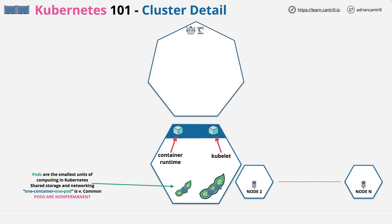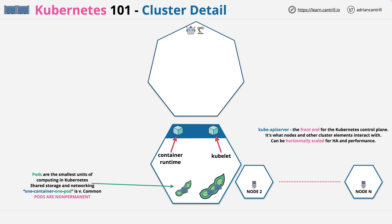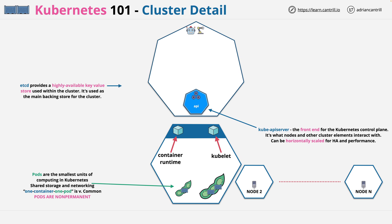There are other things linked to pods which provide more permanence, but more on that elsewhere. Now let's talk about what runs on the control plane. First, the API — known formally as kube-apiserver — is the front end for the control plane. It's what everything generally interacts with to communicate with the control plane, and it can be scaled horizontally for performance and to ensure high availability. Next, we have etcd, which provides a highly available key-value store — a simple database running within the cluster, which acts as the main backing store for cluster data.